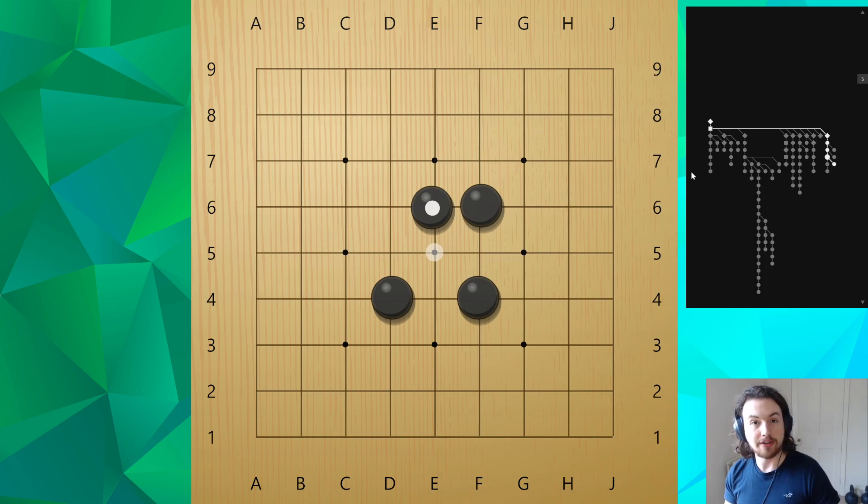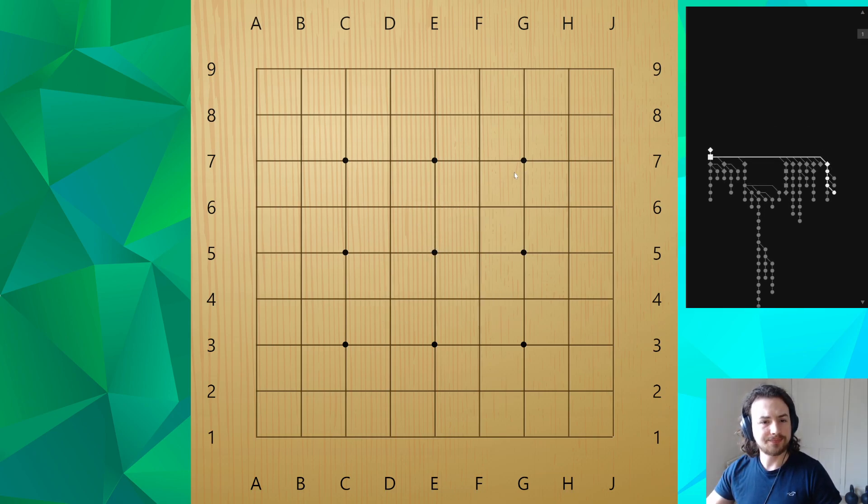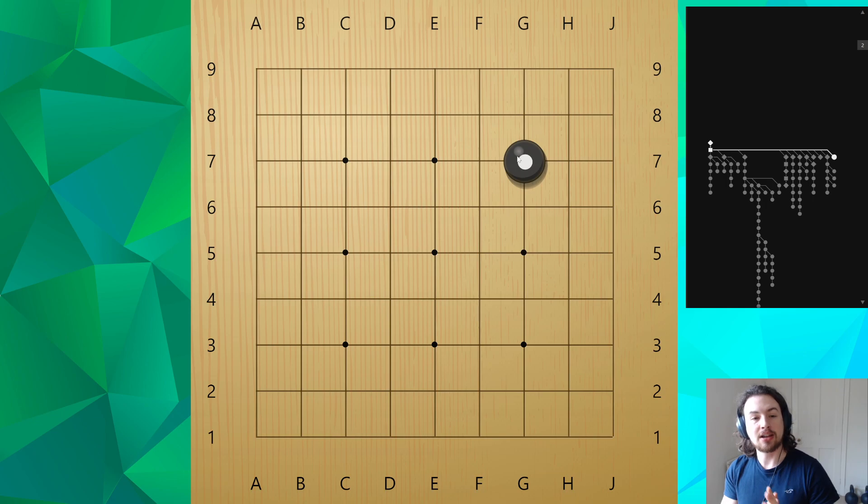One thing that I also want to mention very quickly is that in the game of Go, we also have an idea about whoever plays first. Black always plays first. Then White, being the player that goes second, gets a couple of points because they go second. This is a way to offset the advantage that Black has, and this is called Komi.